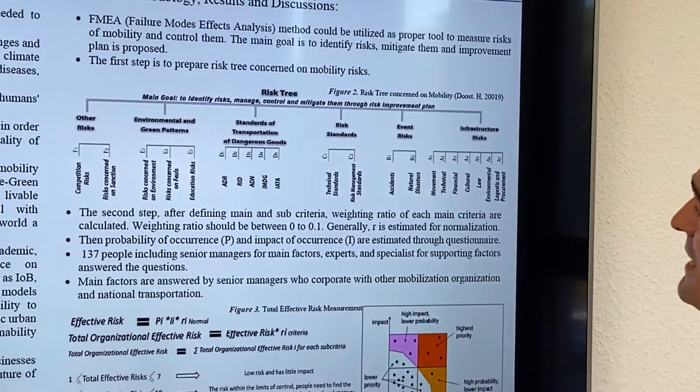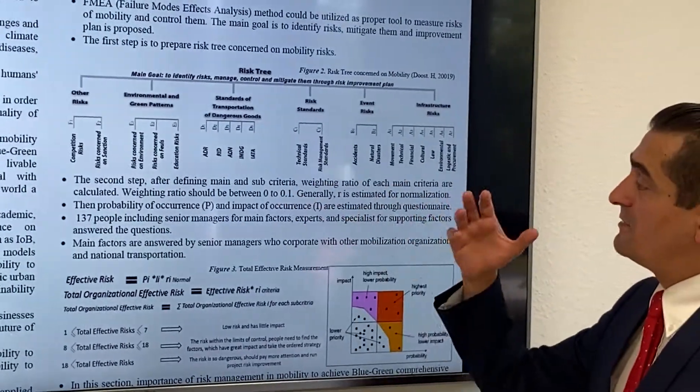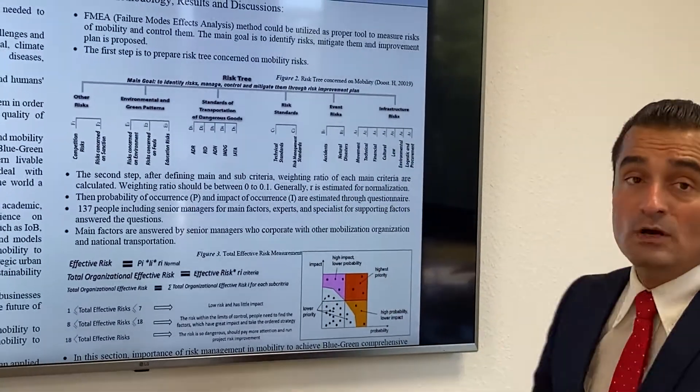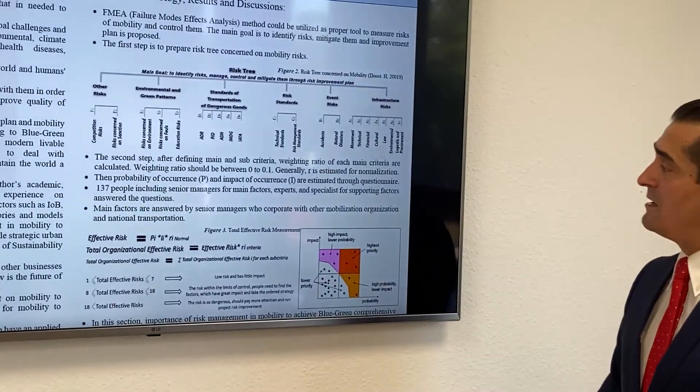We did measurements for three factors: ratio between 1 to 10, then normalization, probability between 1 to 5, and impact between 1 to 5.